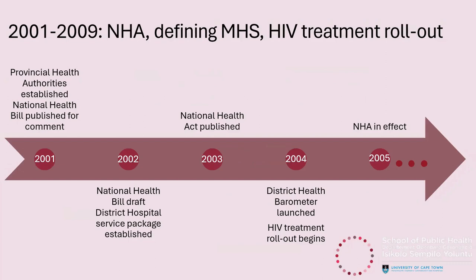The next era, from 2001 to 2009, shows a drop in policy attention to the district health system. By end of 2001, many provinces had established their provincial health authorities. In 2002, a draft National Health Bill provided for demarcation of the district and stated that local government must render municipal health services, but there was confusion regarding the definition of municipal health services. The draft bill included environmental health services as well as promotive, preventive, and curative services in the municipal health services basket, but MINMEC agreed this was too onerous and suggested a more narrow definition.